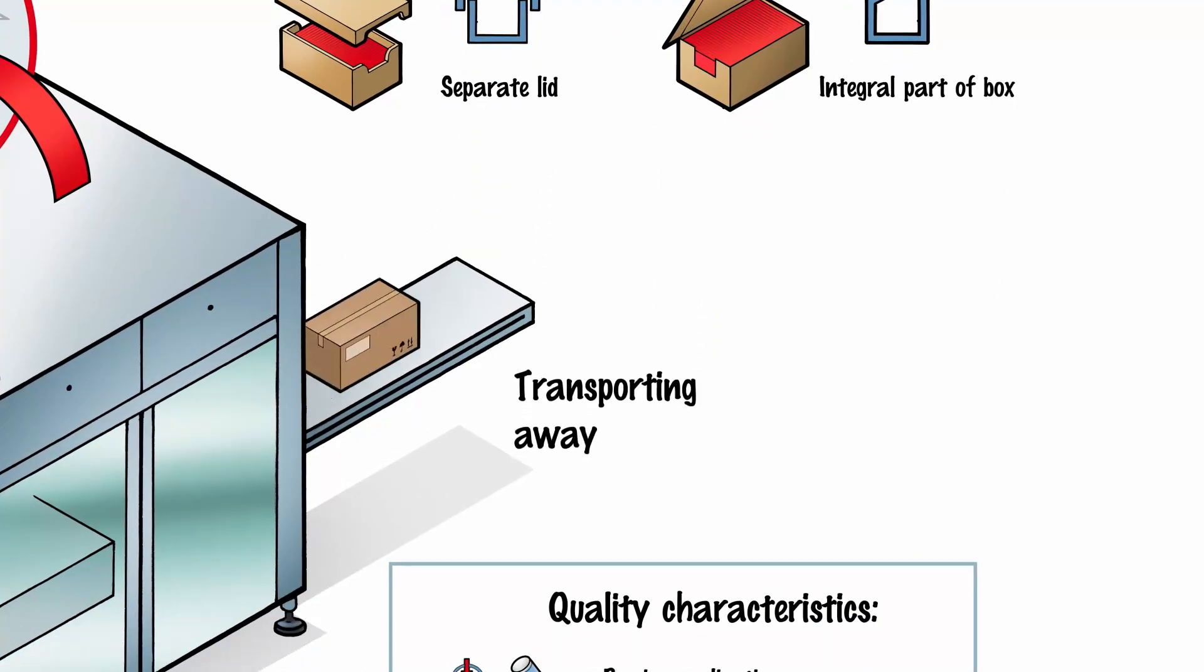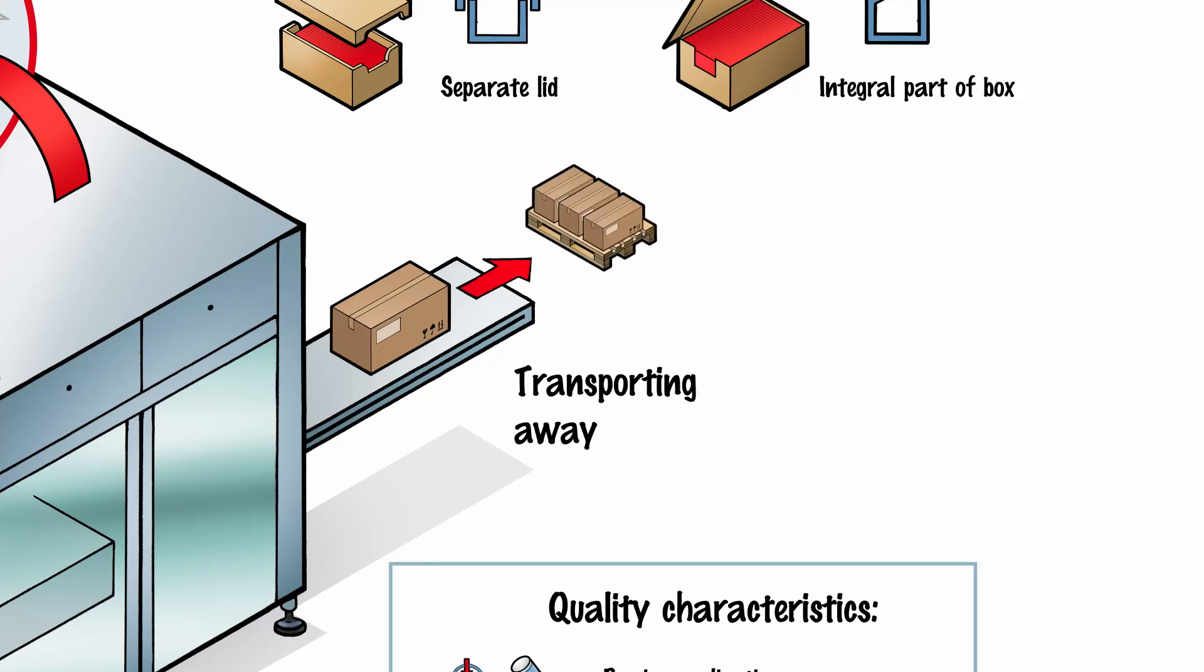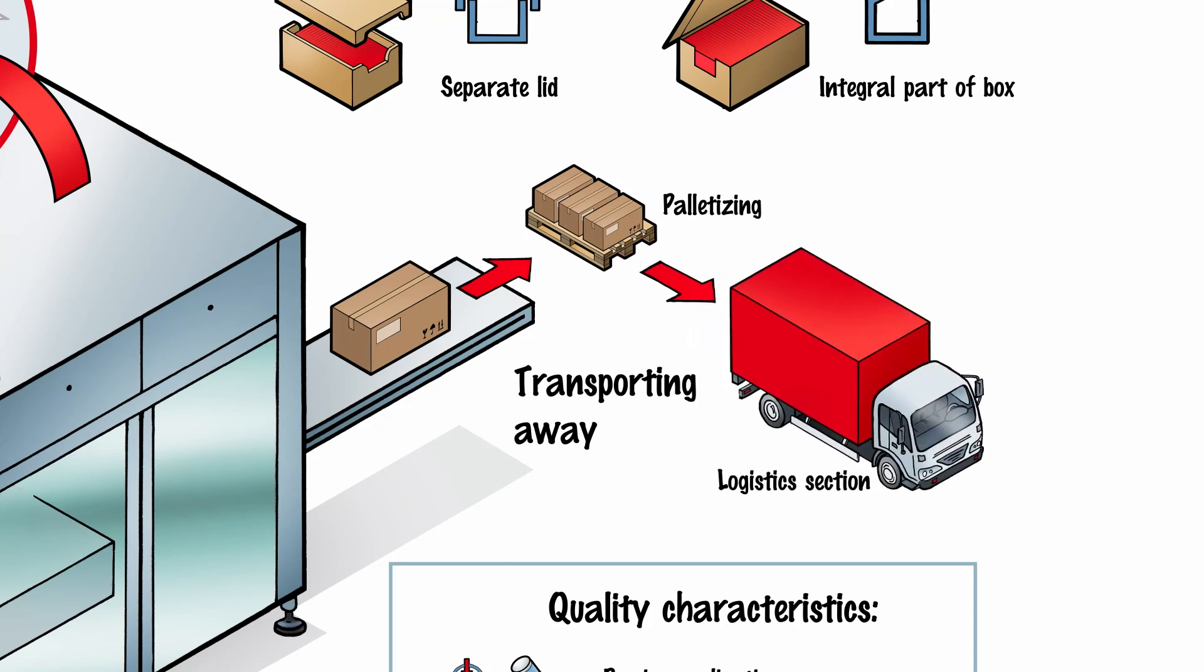The finished container is now transported away. The next step depends on the purpose of the box. If serving as presentation packaging, it undergoes further processing in the palletizing section, for example. If the box is the packaging that is being used for shipping, it goes straight to the logistics section.